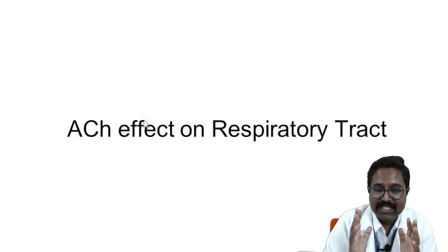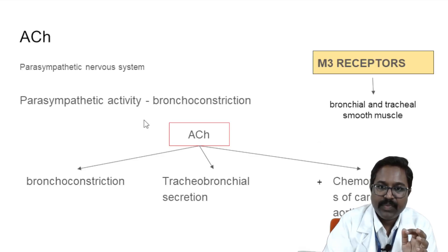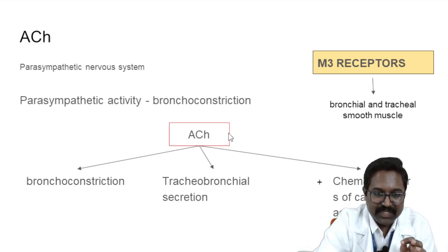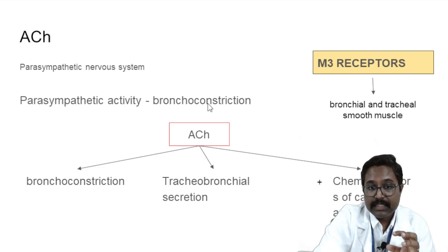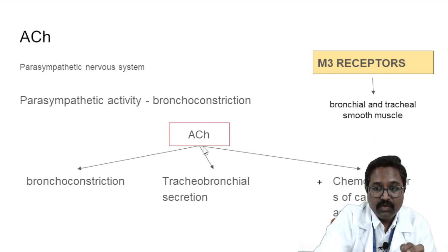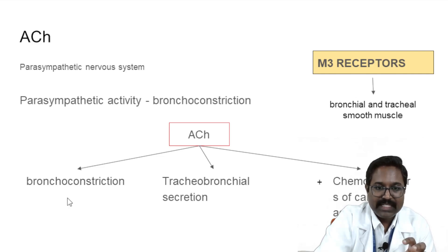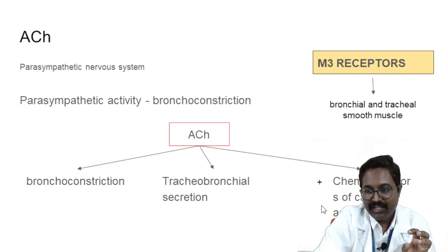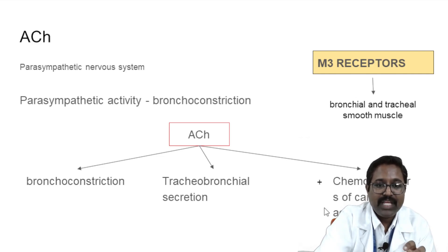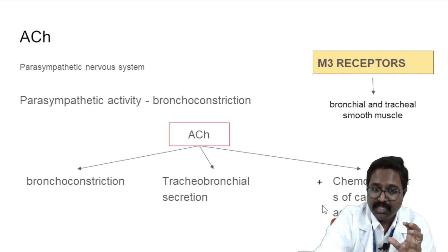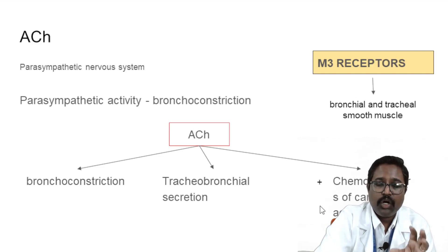When acetylcholine reaches the respiratory tract — as a parasympathomimetic drug — it acts on M3 receptors on bronchial and tracheal smooth muscles causing bronchospasm (bronchoconstriction), increased tracheobronchial secretions, and stimulation of chemoreceptors of the carotid and aortic bodies. Therefore, acetylcholine is dangerous in bronchial asthma patients, and externally administered cholinergic drugs are contraindicated in bronchial asthma.